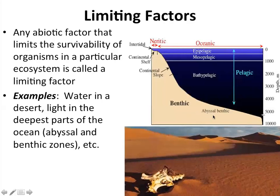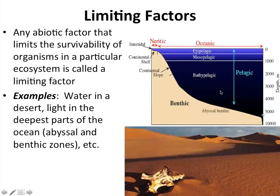The abyssal zone is a layer that contains very deep benthic communities near the bottom of the ocean. As a limiting factor, it limits the survivability of organisms in a particular ecosystem. For example, in a desert there is no water — water is considered to be the limiting factor. Similarly, the two zones at the deepest part of the ocean are represented by organisms called benthos, which are not visible because they are present at the deepest part of the ocean.